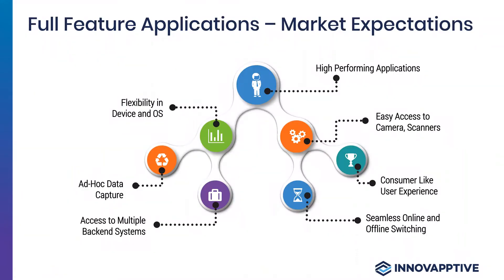Let's talk about what the market expectations are — what are users and consumers of these applications looking for and demanding? They want higher-performing applications. People are booking travel and banking with their smartphones, and they want similar levels of performance and features on their warehouse applications as well. They want to use the camera capability, the scanning capability using the camera to simplify experiences like OCR, where you can capture a picture and it automatically populates your data based on scanned text.